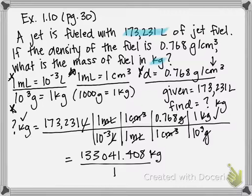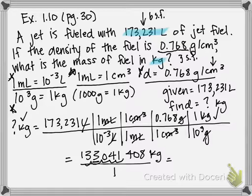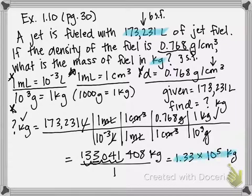Last thing we need to figure out is the number of sig figs here. So we have two numbers written in our problem. We have this 173231. That's got six sig figs. And then we have the density, which is 0.768, which has just three sig figs. So that's what I'm going to use to figure out the number of significant digits in my answer. And to prevent ambiguity, I'm going to go ahead and write this in scientific notation. So 133, that's going to be our last digit. We move our decimal over one, two, three, four, five. It's going to be 1.33 times 10 to the fifth kilograms. And that is your final answer.